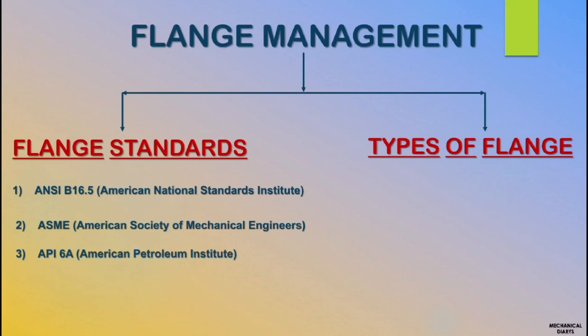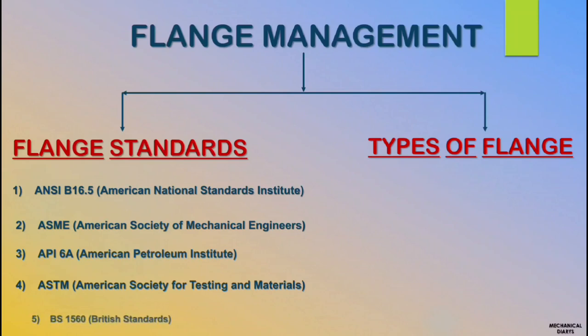There are five types of standard in refinery. First is ANSI B16.5 — American National Standards Institute. Second, mostly common in refinery, is ASME — American Society of Mechanical Engineers. Third is API 6A — American Petroleum Institute. Fourth is ASTM — American Society for Testing and Materials. Last is BS 1560 — British Standards.